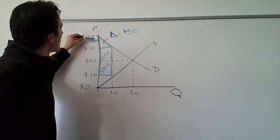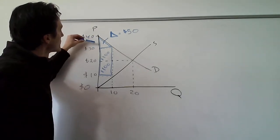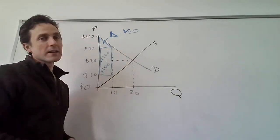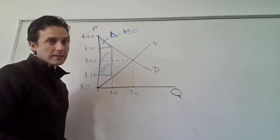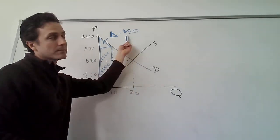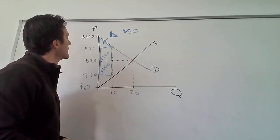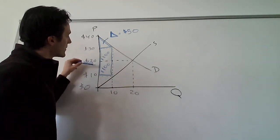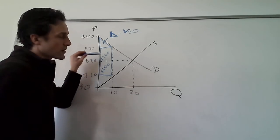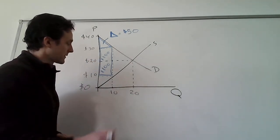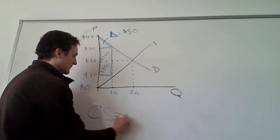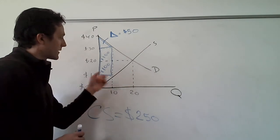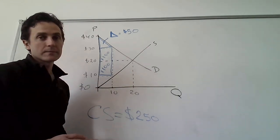Breaking it up: the triangle has a vertical dimension of $10 and a horizontal dimension of 10 units, so its area is one-half × 10 × 10 = 50. Each of the two rectangles is $10 by 10 units, so each equals 100. That tells us consumer surplus in this market is $250 when the $10 price ceiling is imposed.